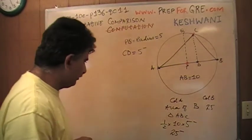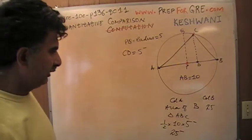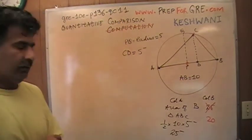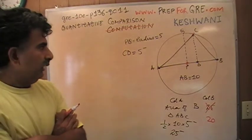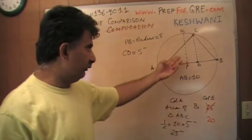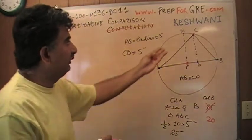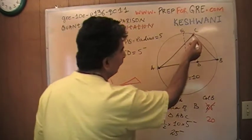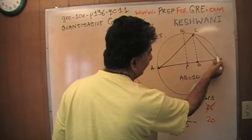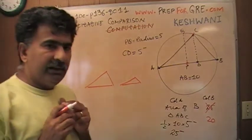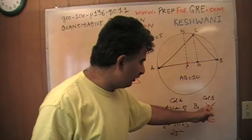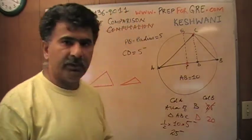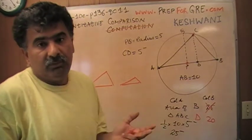Now I am going to change the question a little bit. Let's suppose that instead of 25, the quantity given in column B was 20 — then what would the answer be? All we know for certain is that the area of this triangle is less than 25, but we cannot tell how much less than 25, because we don't know where point C is. The triangle may look different depending on where C is placed — the height could be very small. All we can tell is that it's less than 25. Had this quantity been 20 instead of 25, the answer would have been D, because we cannot compare — it could be more than 20, it could be less than 20.